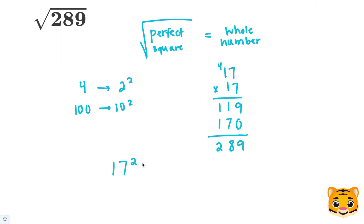That means that 17 squared is 289. So the square root of 289 gives us 17, and this is our solution.